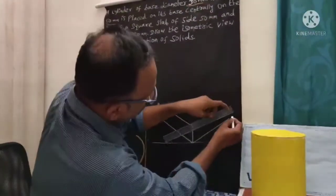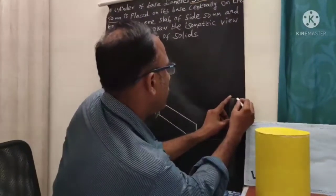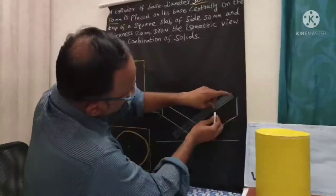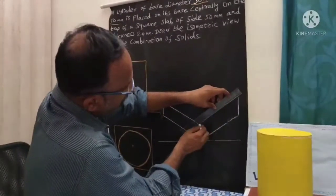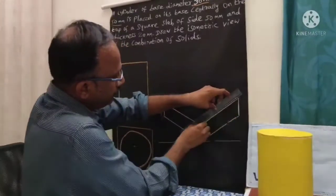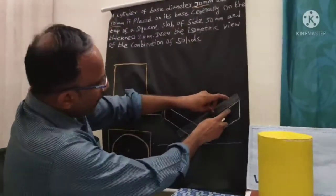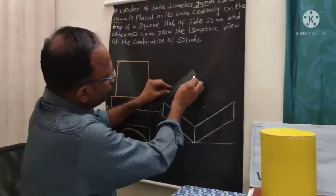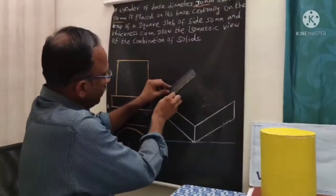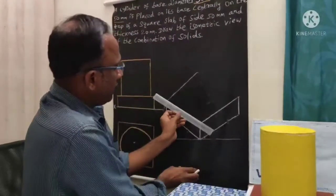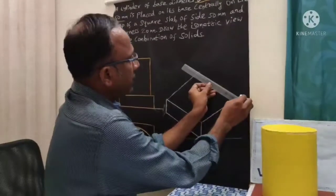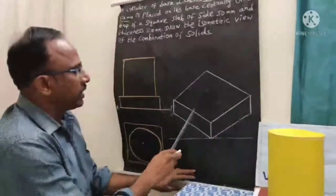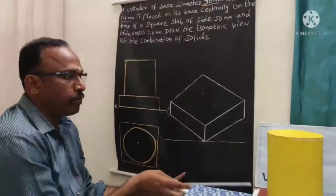Similarly, I draw the vertical line from this point — 20 mm height. I am going to draw one parallel line from this isometric axis. Draw one parallel line from this particular end, parallel to this line. Similarly, parallel to this, I need to draw another line. Now connect these two parts. This is the way I am going to draw the isometric of this square slab. One portion is over.